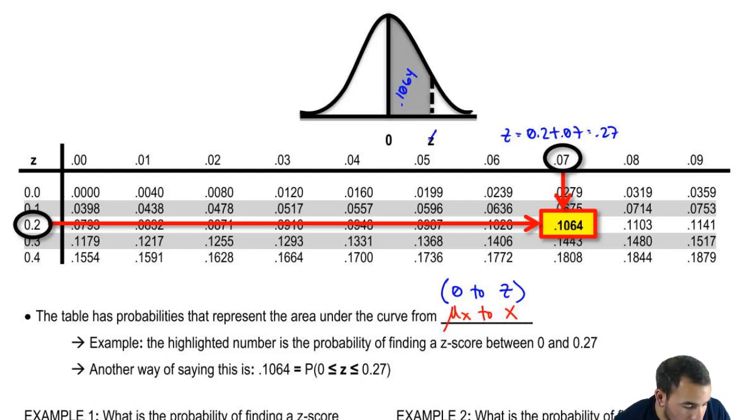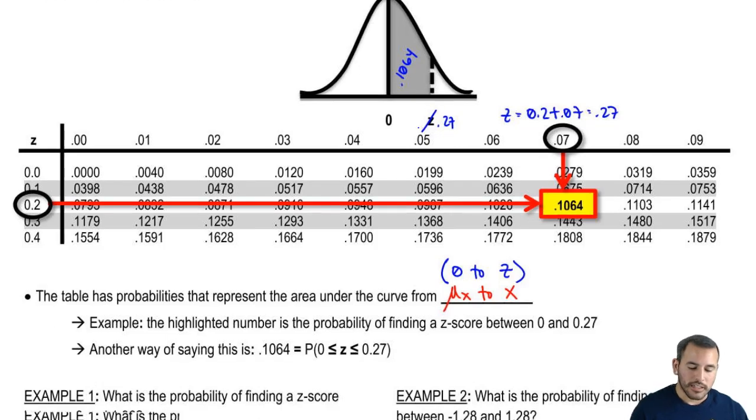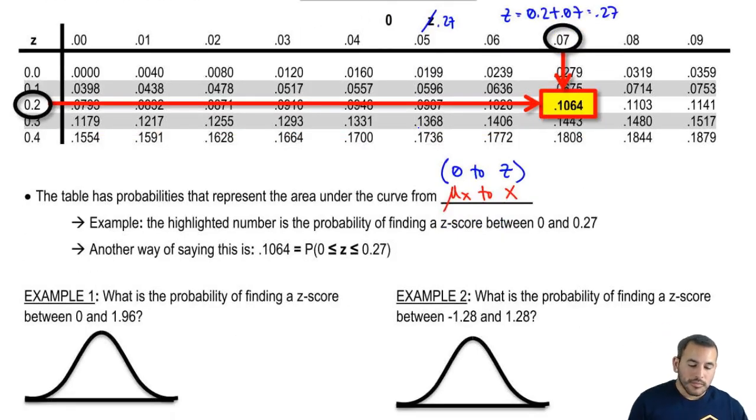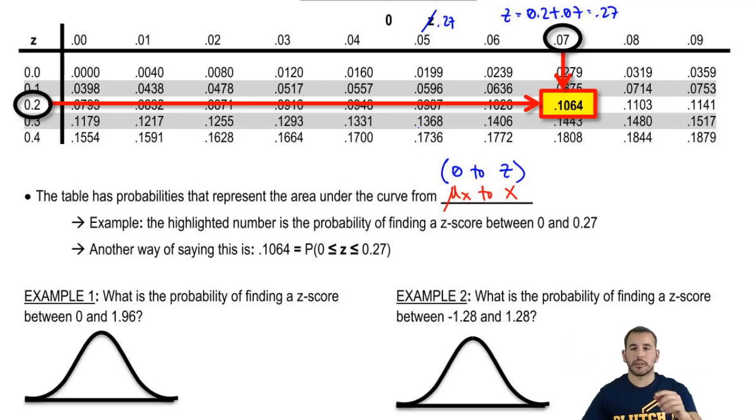The z-score in this particular case was 0.27. From zero to 0.27, the area in between that is 0.1064, or about 10.64%. This highlighted number is the probability of finding the z-score between zero to 0.27. Another way of writing this would be 0.1064 equals the probability that z is between 0 and 0.27. That's just a mathematical way of writing what I just said.